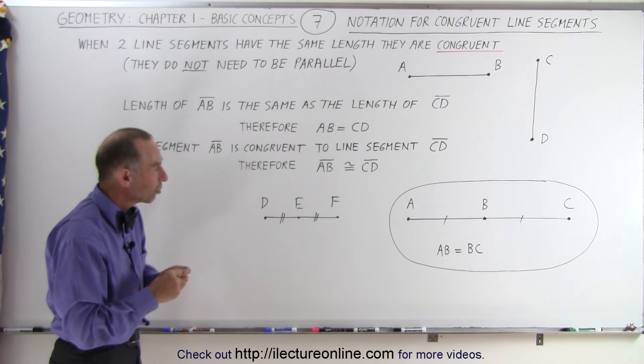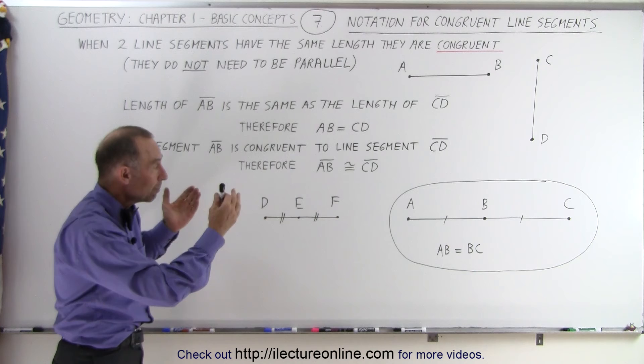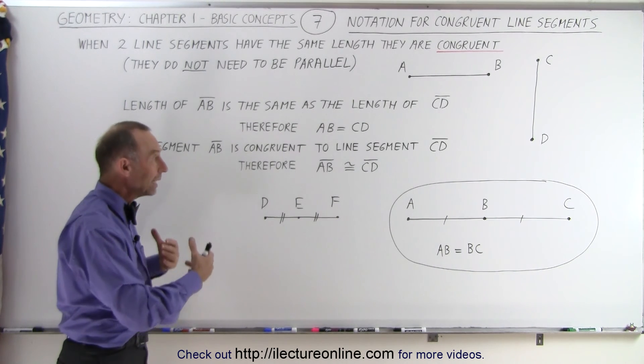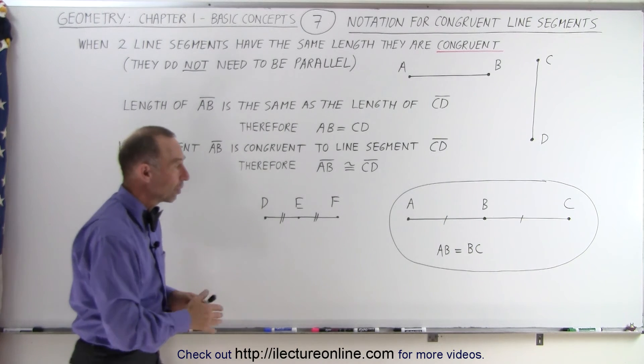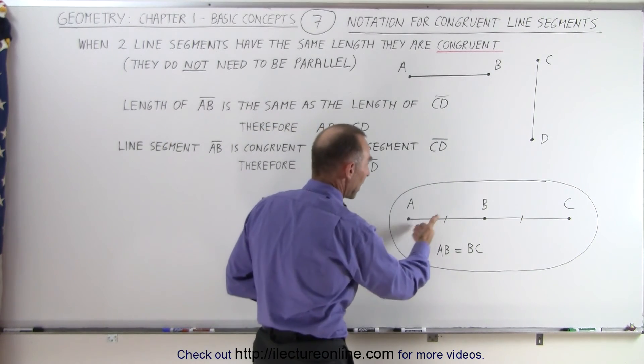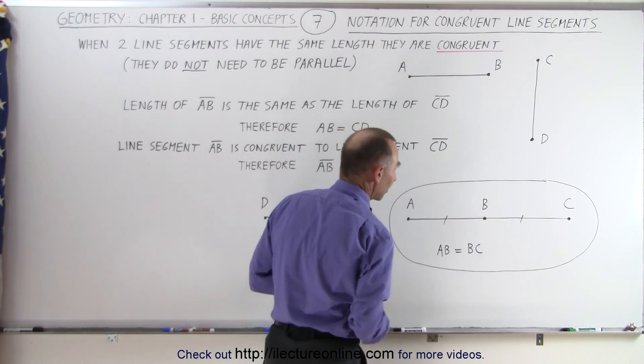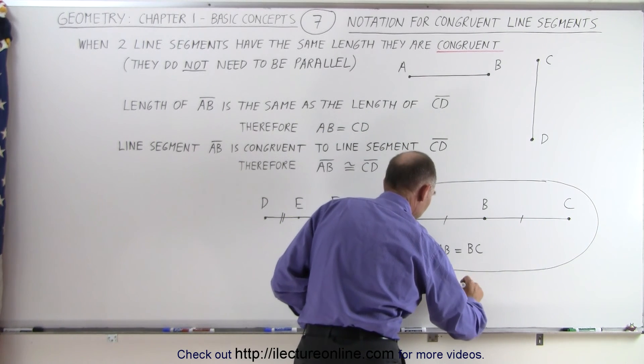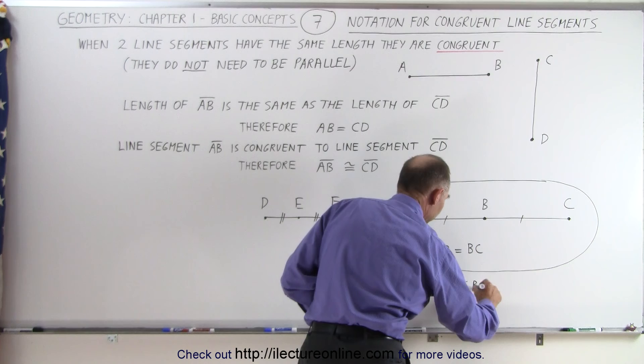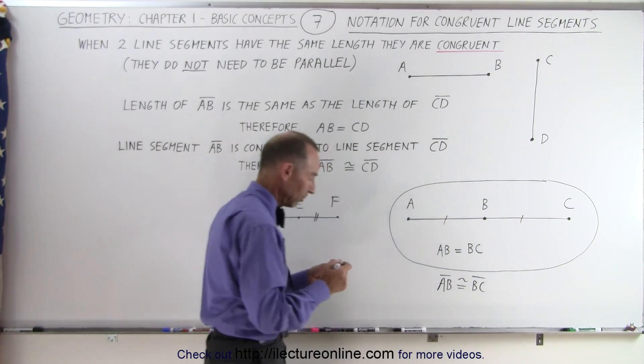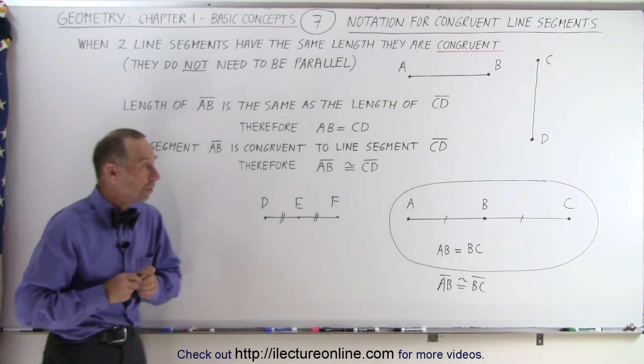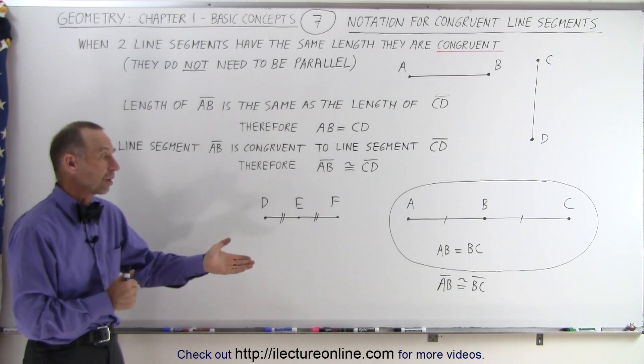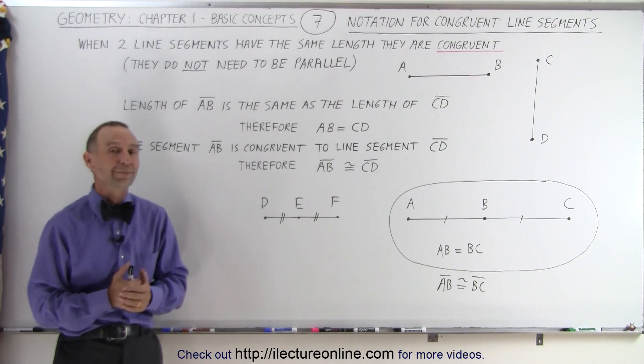So those are some of the ways in geometry we can make notation indicating they have the same length or indicating they are congruent. So here you would say that line segment AB is congruent to line segment BC, so we can write that line segment AB is congruent to line segment BC. That's how we can use different notation to imply certain things in geometry, and when it comes to congruency, this is how we do it.